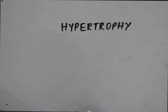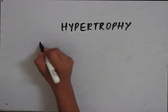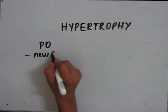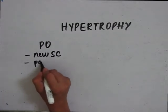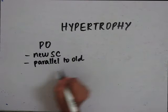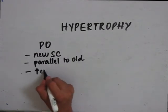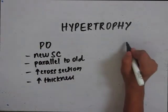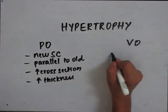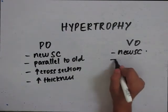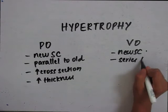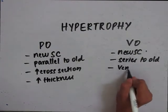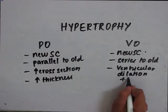When there is pressure overload, there are formations of new sarcomeres. These sarcomeres are arranged parallel to the old sarcomeres, so that there is increase in cross-section and increase in thickness of the wall. Whereas, when there is volume overload, there are formations of new sarcomeres which are arranged in series with the old sarcomeres, so there is ventricular dilation, which is accompanied by hypertrophy.